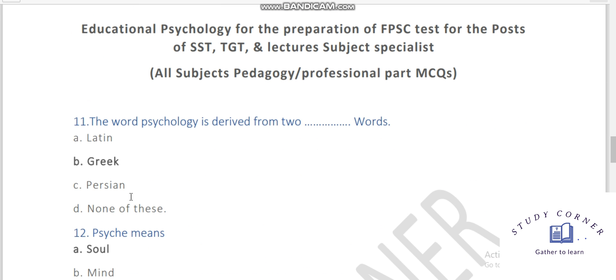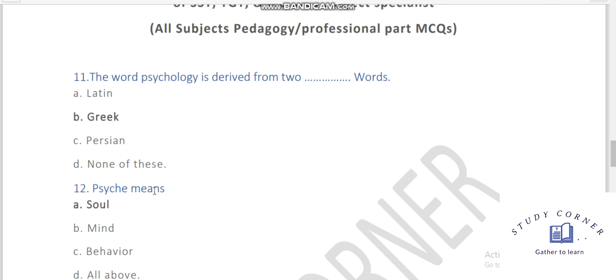The word psychology is derived from two words. This is the Greek word psychology. The two Greek words are psyche and logos. Psyche means your soul and logos means the study of.